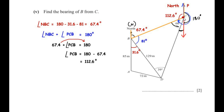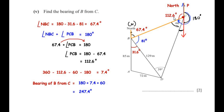At point C, the total angle is 360 degrees. We have 180° for the straight north-south line, 60° from the question, and 112.6° just calculated. Subtracting: 360 − 112.6 − 60 − 180 = 7.4 degrees. The total bearing = 180° + 7.4° + 60° = 247.4 degrees. So the bearing of B from C is 247.4 degrees.